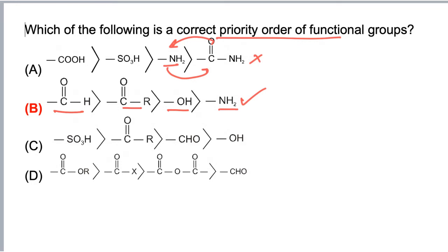If we take option C, here ketone is given higher priority, but actually aldehyde has higher priority than ketone. So this is the wrong answer.